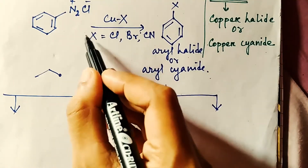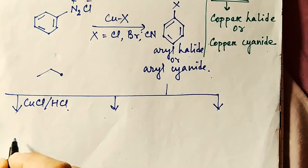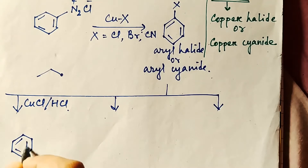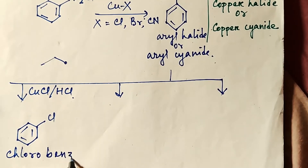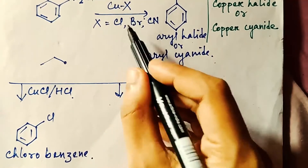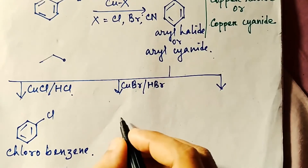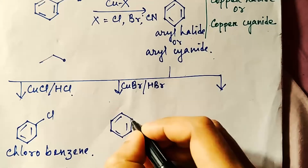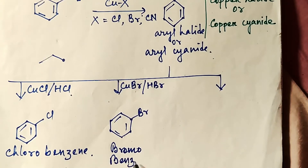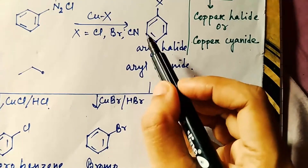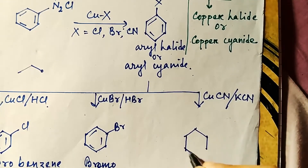If X is chlorine and you use CuCl and HCl, the product will be chlorobenzene. If X is bromine and you use CuBr and HBr, the product will be bromobenzene. If you use cyanide with CuCN and KCN, then you will get cyanobenzene.